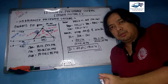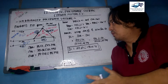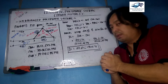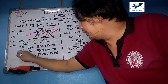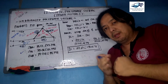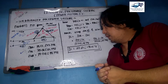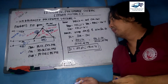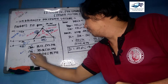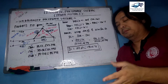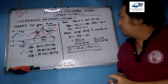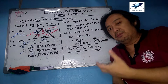Continuing problem number one from where we stopped. We already computed the delta-connected impedances ZAB, ZBC, and ZCA with their respective values. The problem states a 440-volt supply which is a line voltage with no reference vector given.